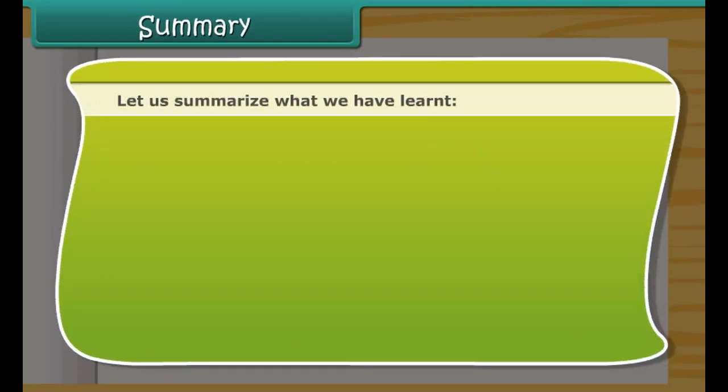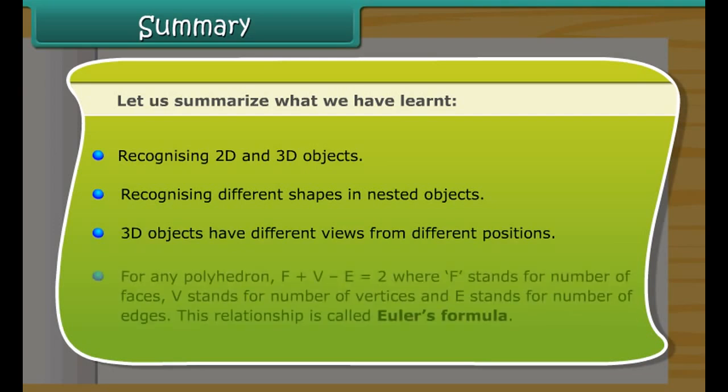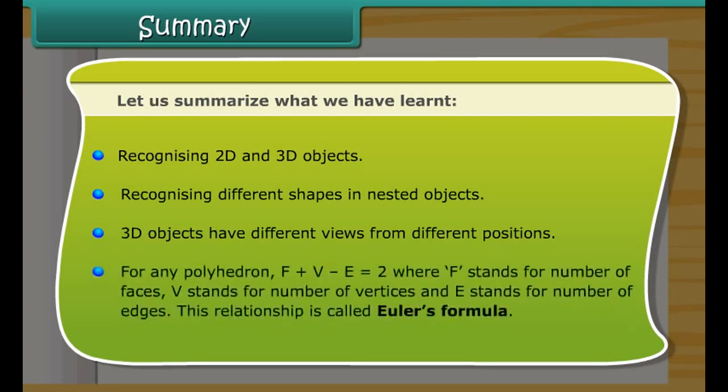Let us summarize what we have learned: recognizing 2D and 3D objects, recognizing different shapes in nested objects, 3D objects have different views from different positions. For any polyhedron, F plus V minus E equals 2, where F stands for number of faces, V stands for number of vertices, and E stands for number of edges. This relationship is called Euler's formula.